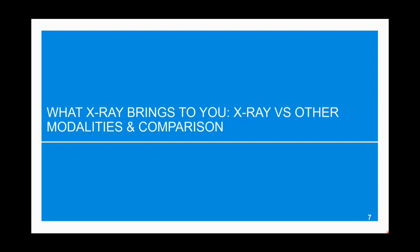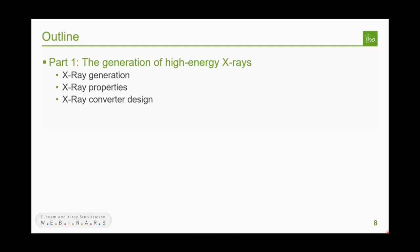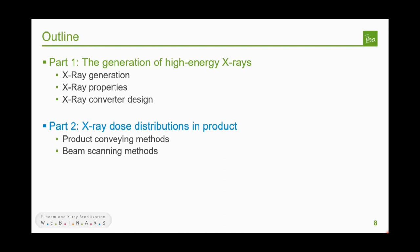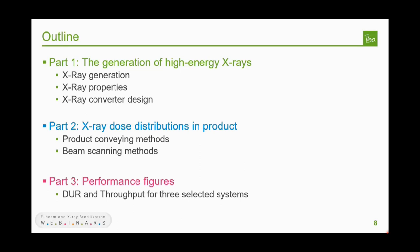Thank you very much, Frederick, for this nice introduction. Today I would like to speak about the properties of x-ray, and my talk will cover three topics. The first will be about the generation of x-rays — how to generate them, their properties, and a few words about the design of the x-ray converter. The second part will be about dose distribution of x-ray in product and how different conveying methods and beam scanning affect that distribution. The third part will be about performance figures: dose uniformity ratio and throughput for three selected systems.